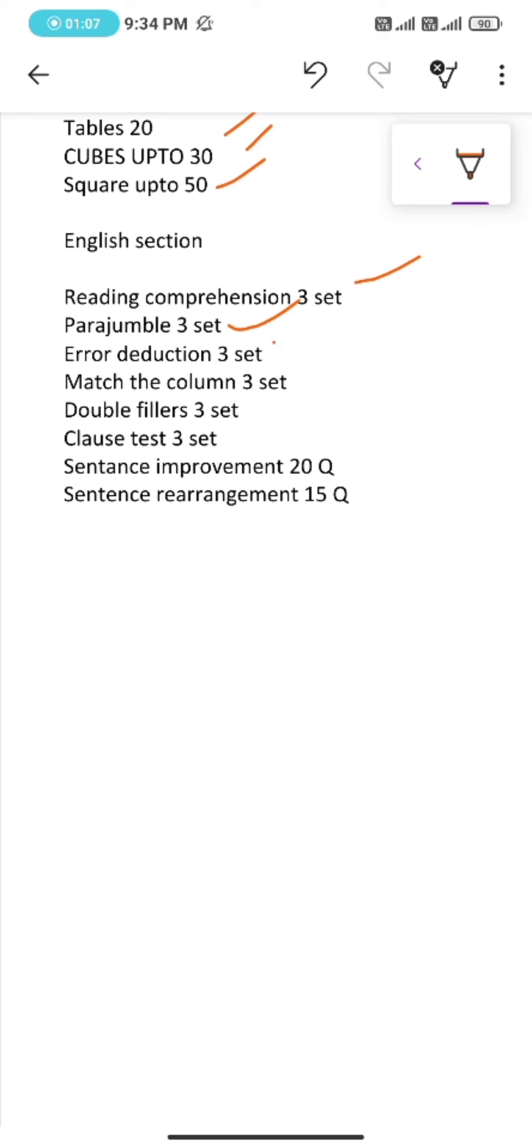Under English section, reading comprehension 3 sets, para jumble 3 sets, error deduction 3 sets, match the column 3 sets, double fillers 3 sets, cloze test 3 sets.